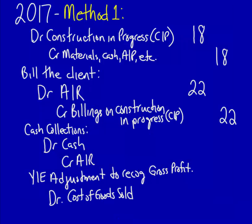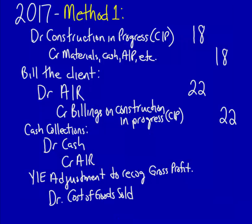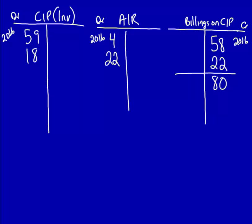The entry for cash: debit cash $26, credit accounts receivable $26. Update the T-accounts: credit to accounts receivable $26. The total in the accounts receivable account is now zero. This makes sense as it's the end of the contract and the client has paid us the full $80 selling price.